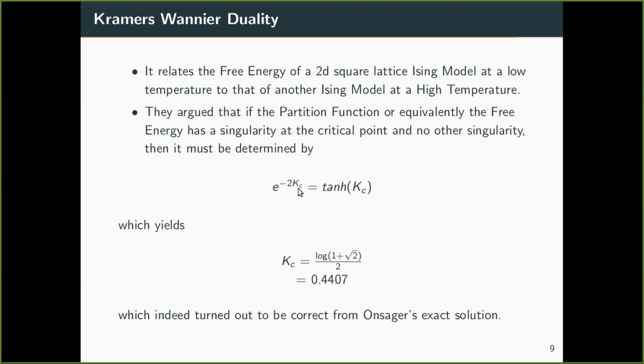e raised to power minus 2Kc is equal to tan hyperbolic Kc. From here we can calculate that Kc is 0.4407 which turns out to be correct from Onsager's exact solution.